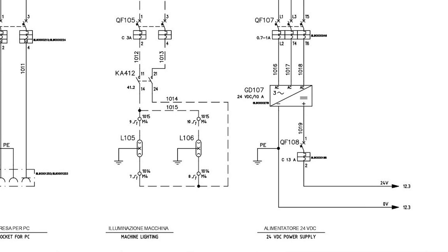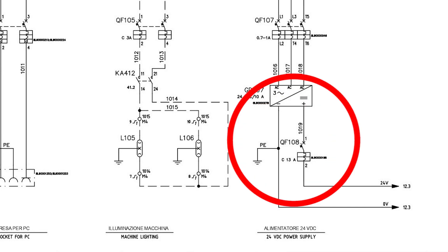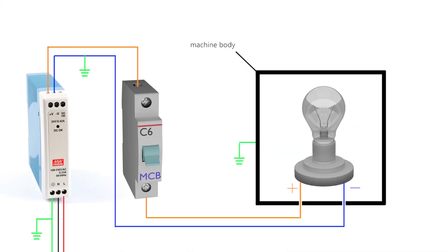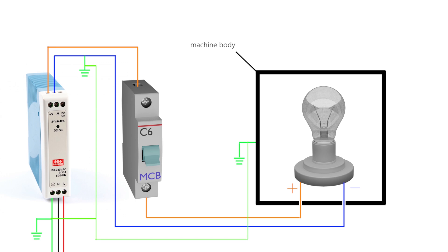One of my subscribers asked why we connect the negative DC wire to the ground earth terminal in the drawing. Let's look at a simple drawing with a DC power supply connected to a bulb inside a machine, with a wire breaker. The negative DC terminal is connected to ground, and the metal body of the machine is also connected to ground — all ground symbols are connected to each other via the ground wire. In normal conditions, current flows from the 24V DC terminal through the breaker, through the bulb, and back to the negative end of the power supply, completing the circuit and the bulb glows.